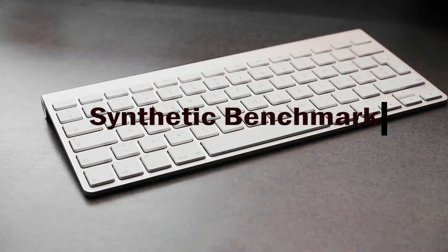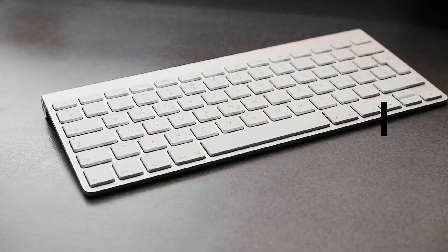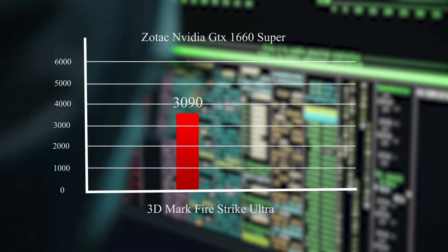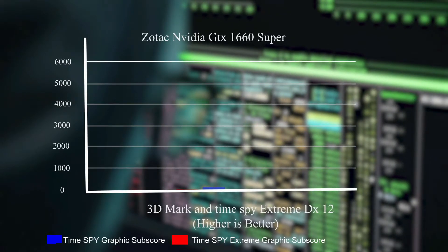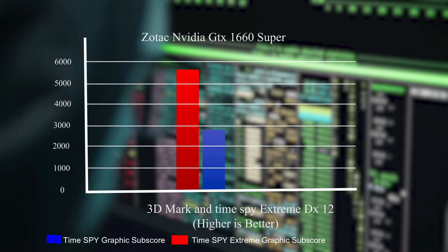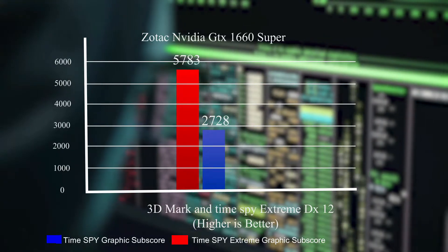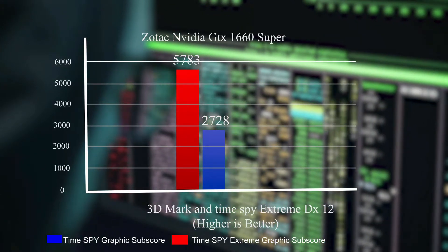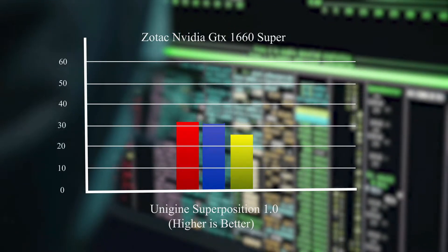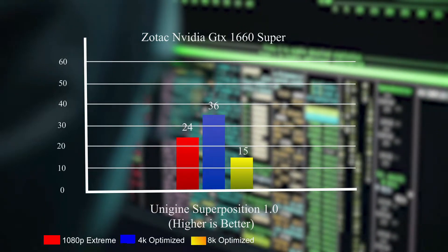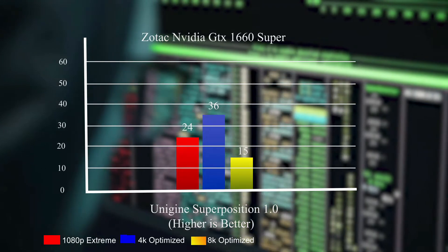Now let's see the synthetic benchmarks of this card. The tools used are 3DMark, Time Spy, and Superposition. The 3DMark Fire Strike Ultra gives this card a score of 3090. 3DMark Time Spy gives a Graphics Subscore of 5783 and Time Spy Extreme Graphics Subscore is 2728. Unigine Superposition gives a score of 24 on 1080p Extreme, 36 on 4K, and 15 on 8K.